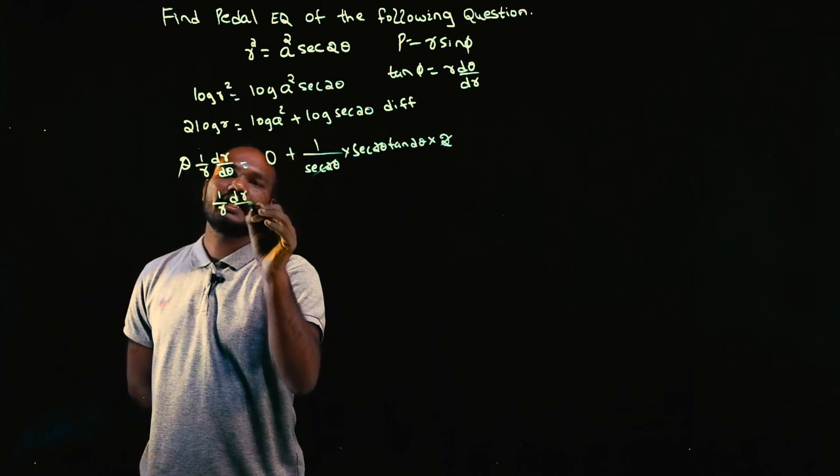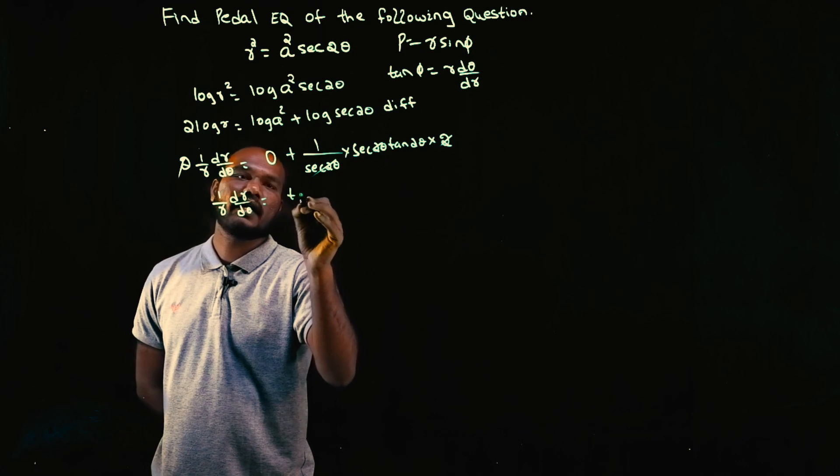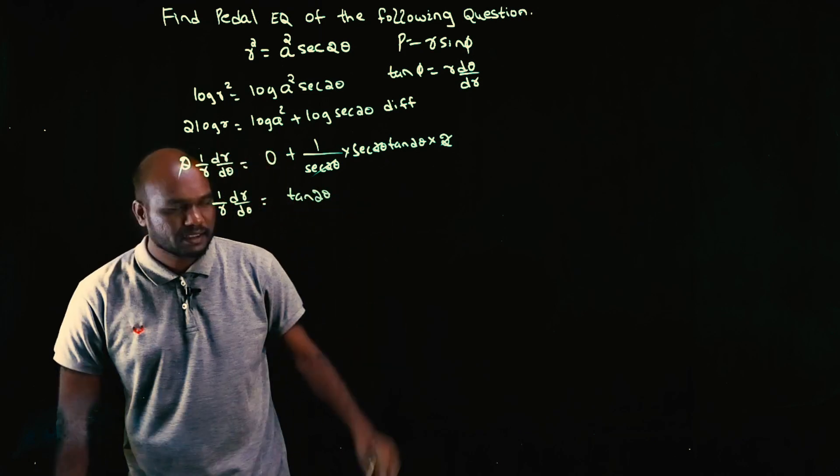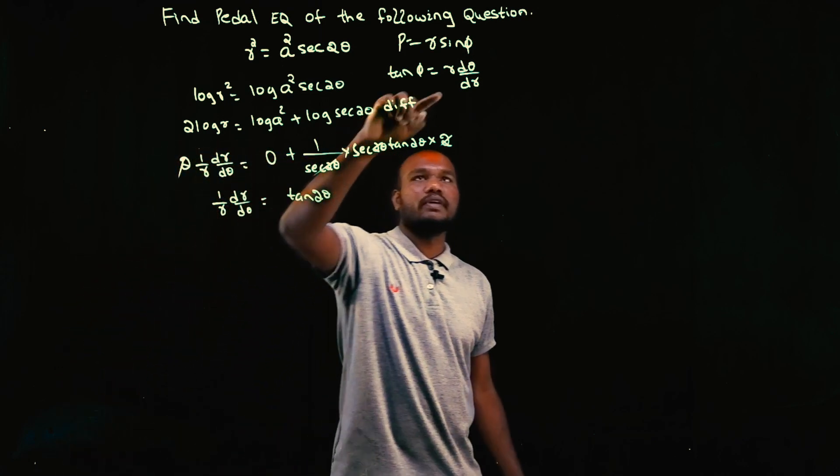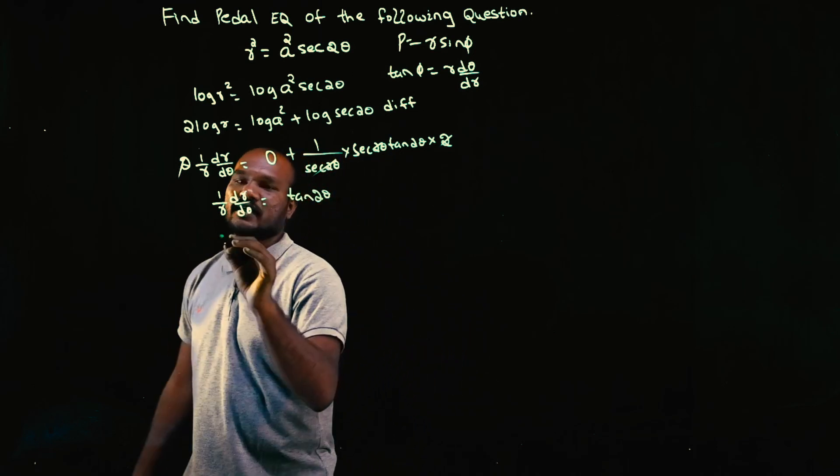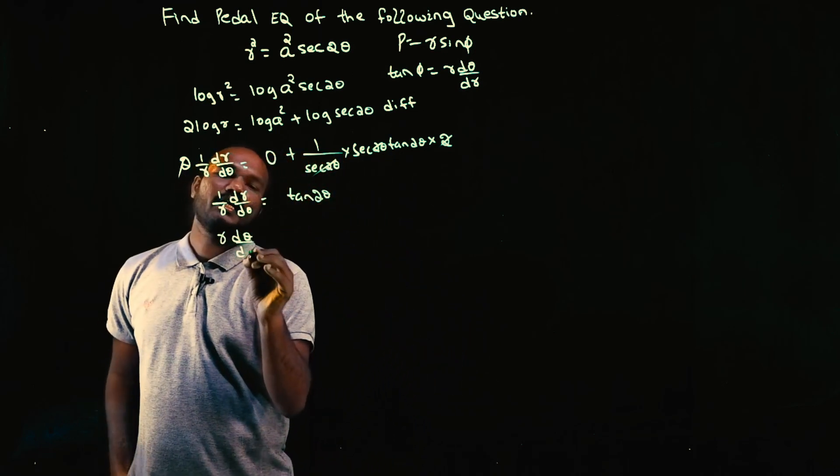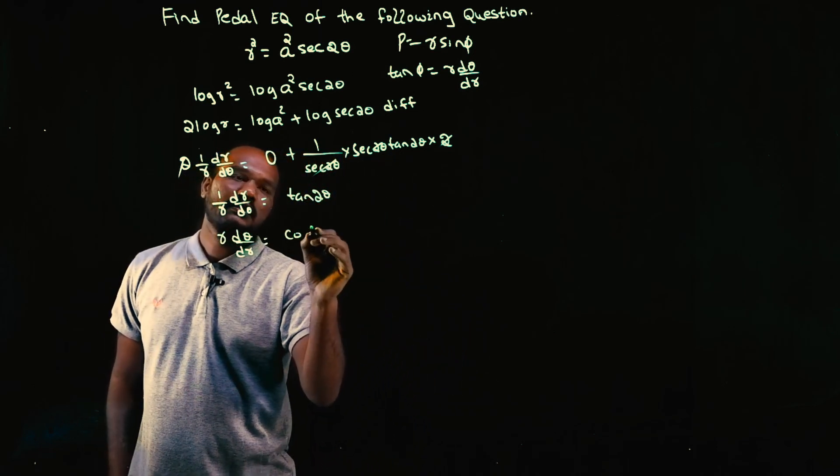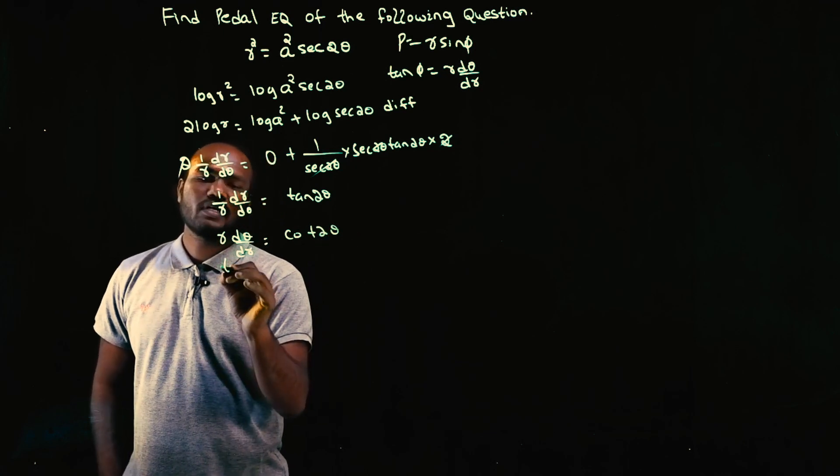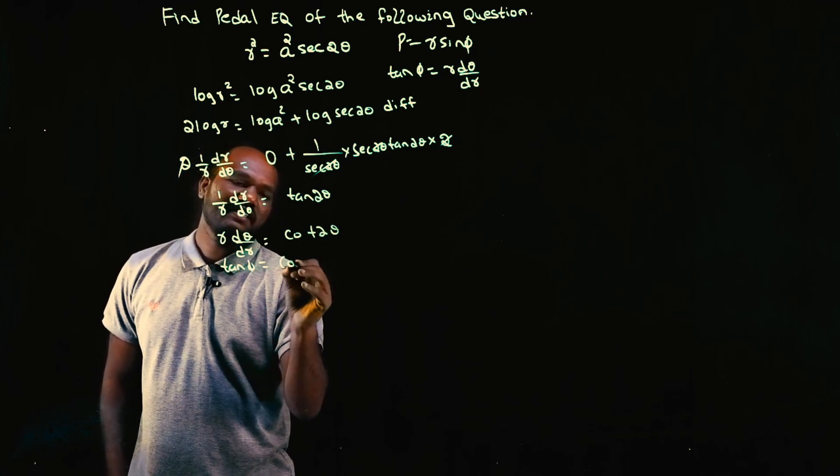We're interested in r, so let's flip it. r × dθ/dr = cot 2θ. This is tan φ, so tan φ = cot 2θ.